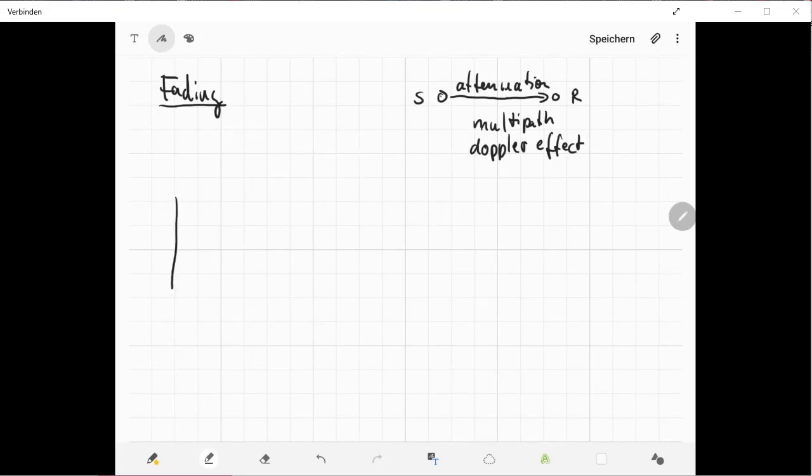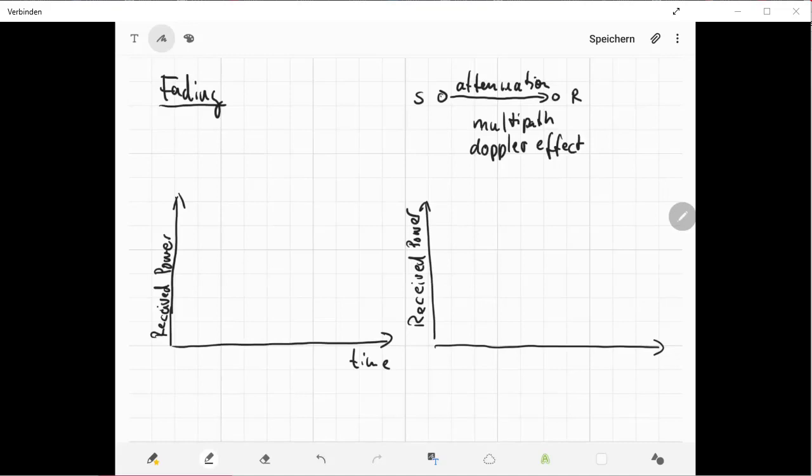And to see these different kinds of fading we consider two diagrams. The first diagram is the received signal, the received power over time. And the second diagram is the received power over the frequency. So we actually look how the signal develops over the time and we look how the signal is received in different frequencies.